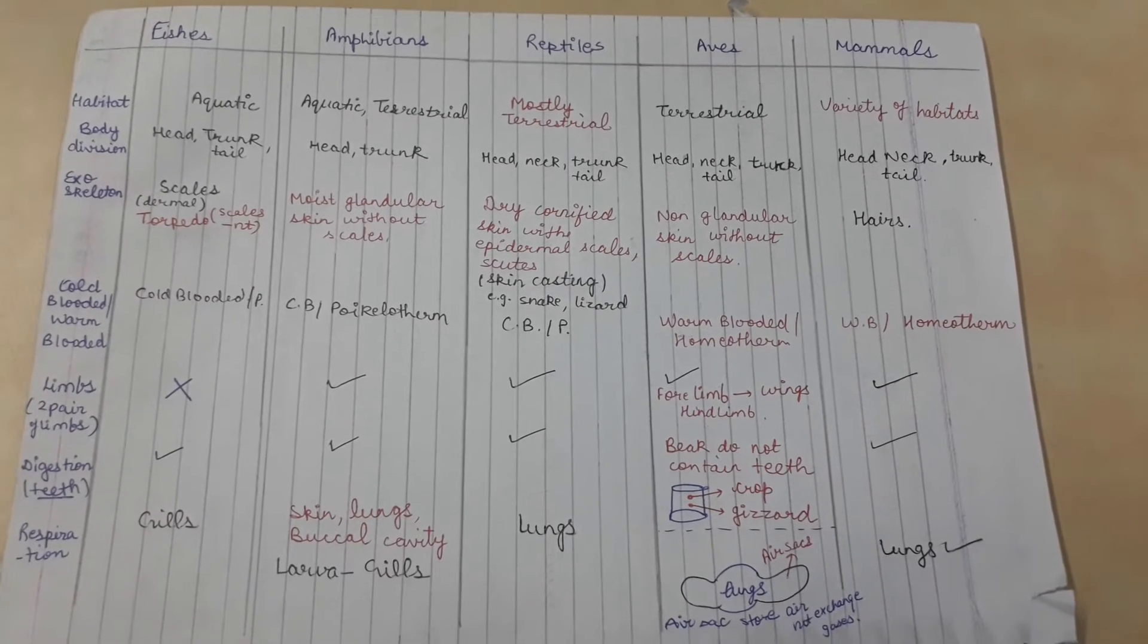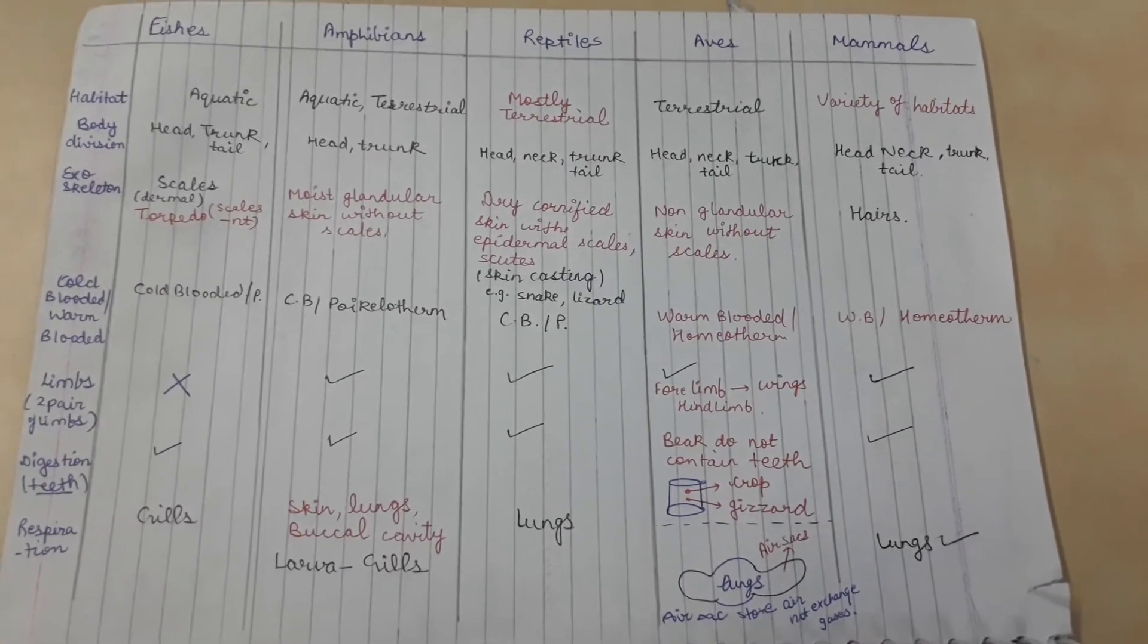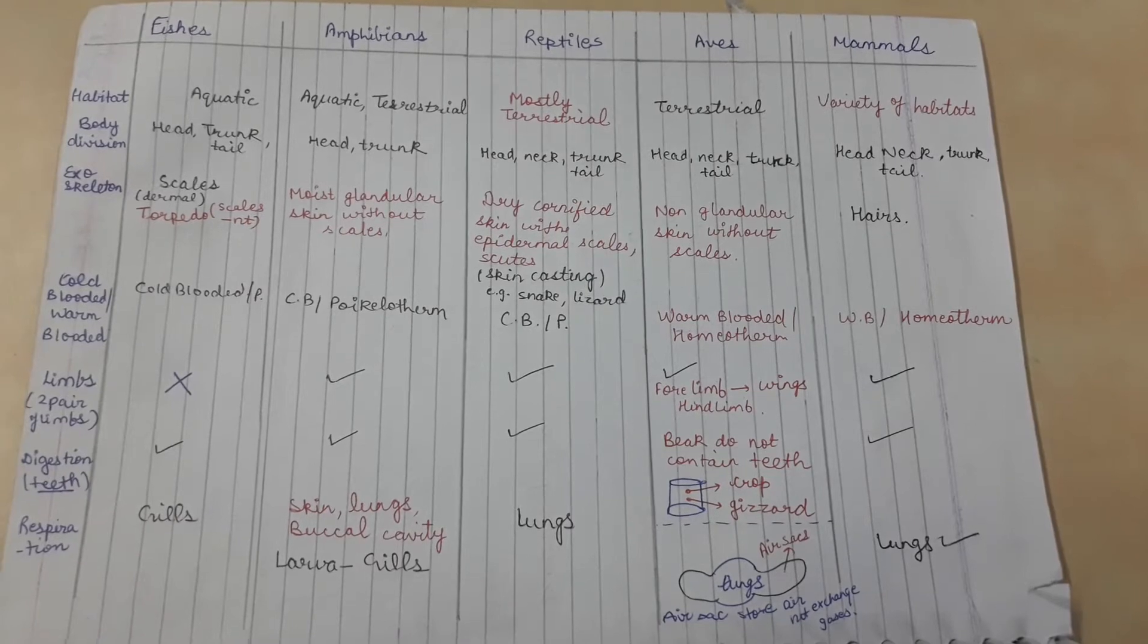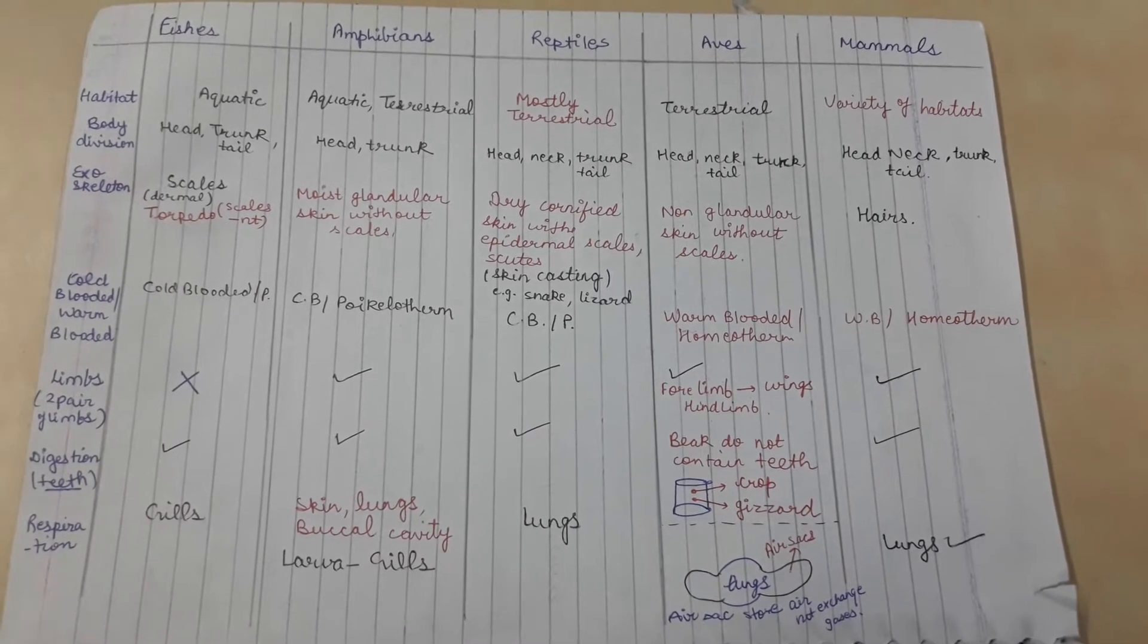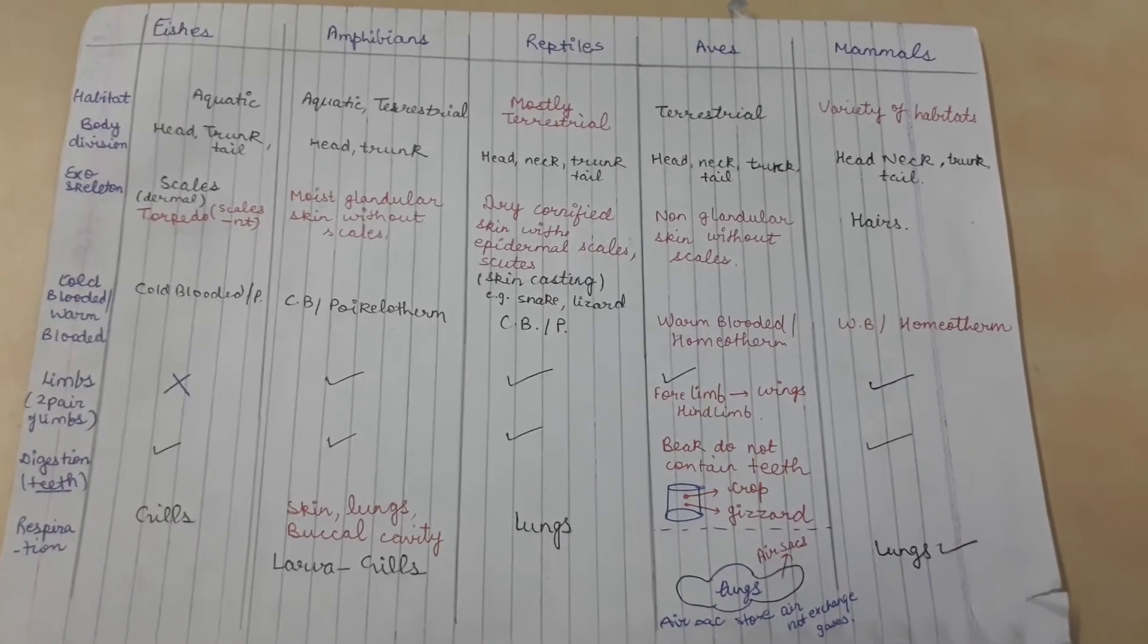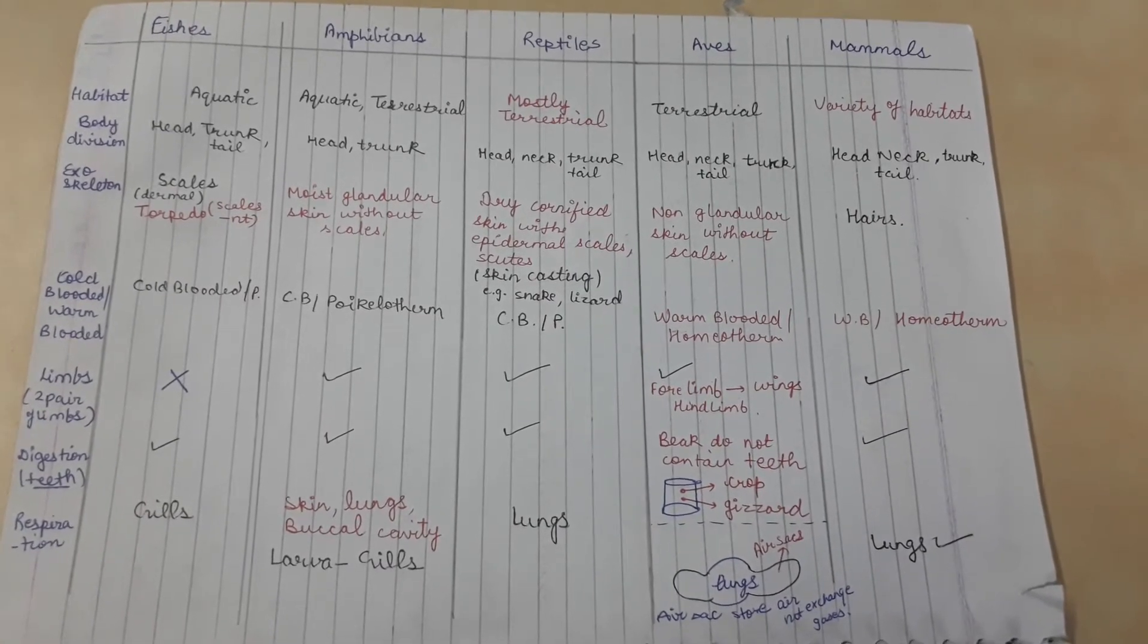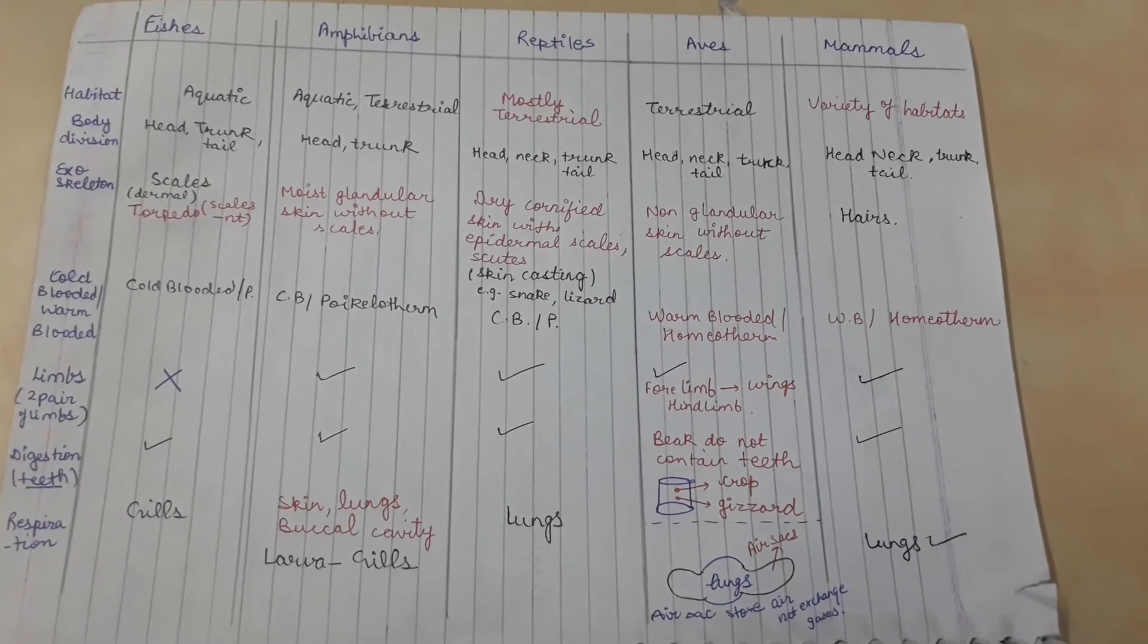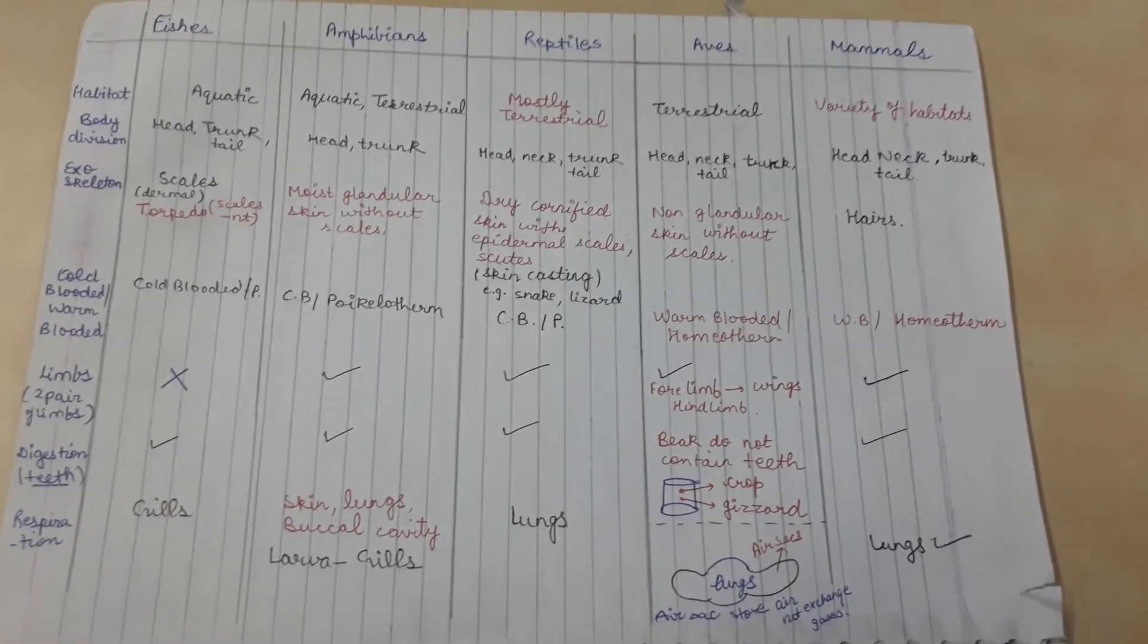Reptiles have dry cornified skin with epidermal scales and scutes. They also possess skin casting. Aves have non-glandular skin with scales. Mammals possess hairs.